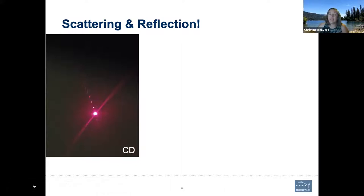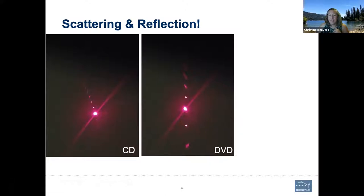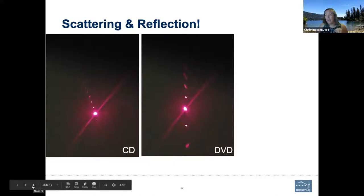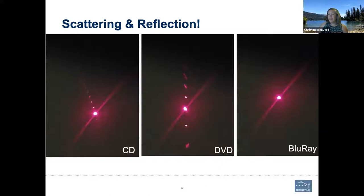Next I took a look at the DVD, and you can see it's similar — there's still scattering with a really bright reflected beam and little spots. There aren't as many spots though, so the beam is not being split as many times, because the grooves on a DVD are much smaller than a CD. Now the Blu-ray is not very interesting — all we see is really the main reflected beam. This isn't surprising because the data grooves on a Blu-ray are tiny, tiny, tiny — much, much smaller. That's how you can fit a whole high-definition movie on a disk the same size as a DVD.